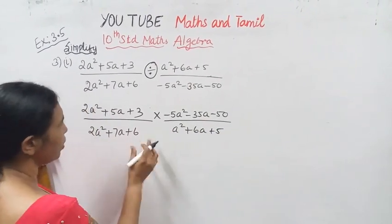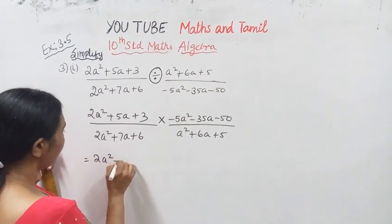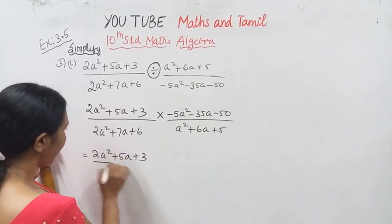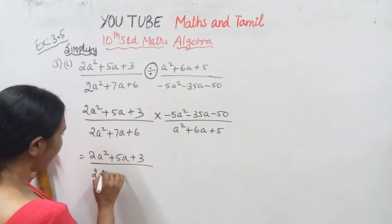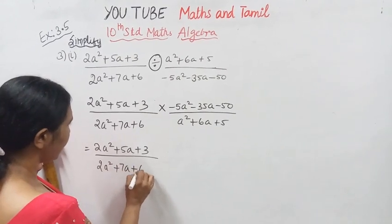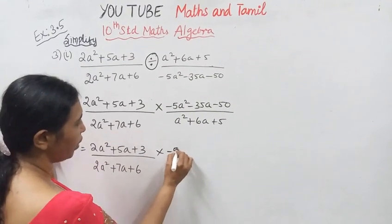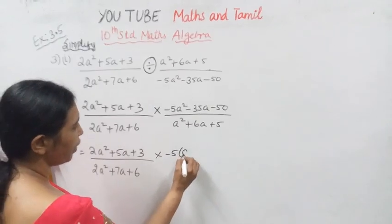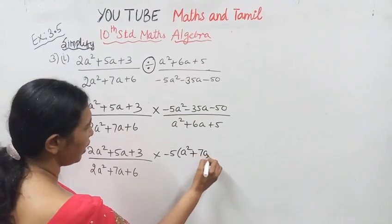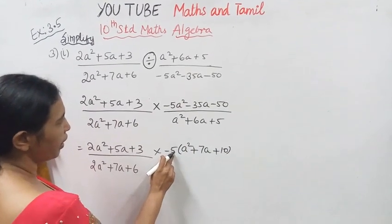You have to get 2a squared plus 5a plus 3 divided by 2a squared plus 7a plus 6. Okay, this is what we do. Minus 5 is a common factor. So we take minus 5 as common, giving us a squared plus 7a plus 10.